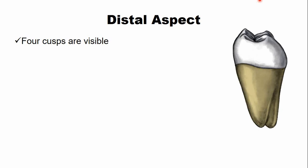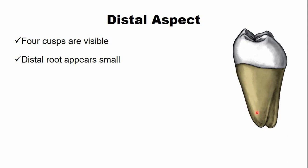From the distal aspect, all four cusps are visible because the cervical-occlusal height of the crown on the distal side is less — similar to the second molar. Due to the less height of the occlusal surface and the taper of the crown on the distal side, the occlusal surface is visible and all four cusps, including the distobuccal and distolingual cusps, can be seen. The distal root appears smaller than the mesial root, and the cervical line on the distal aspect is straight.